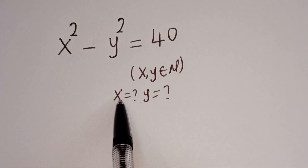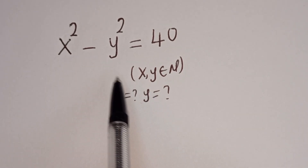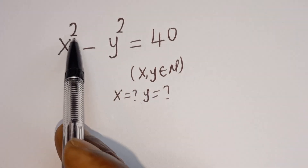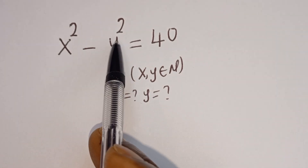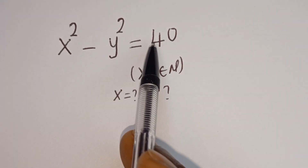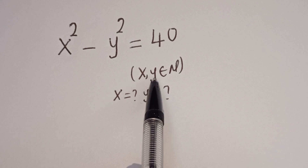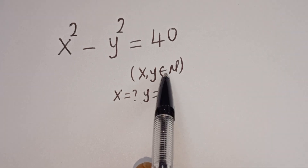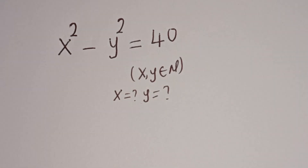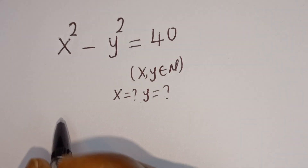Hello. How to solve for x and y in this equation: x squared minus y squared is equal to 40, where x and y are members of the natural number solution.